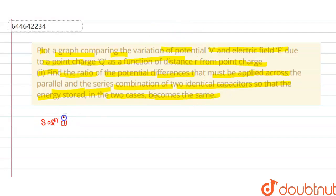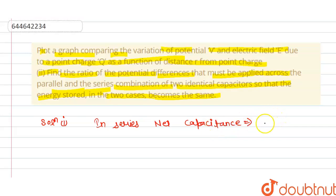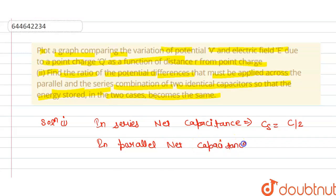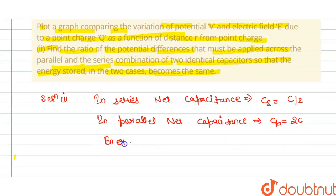The solution to this question: firstly we can plot the graph. In the series arrangement, the net capacitance Cs is equal to C by 2. In parallel, the net capacitance Cp is equal to 2C. The energy stored is U equals half CV squared, that is half times capacitance times potential difference squared.